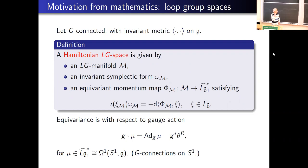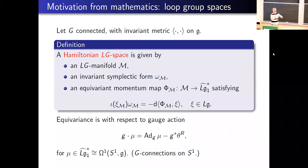The setting is that you have a connected Lie group with an invariant metric on its Lie algebra, and we look at Hamiltonian loop group spaces — infinite-dimensional manifolds with a symplectic form and an equivariant moment map taking values in the dual of the Lie algebra of the loop group. More precisely, you look at the central extension of the loop group and the moment map takes values in the affine hyperplane at level one — it's only affine equivariant if you don't centrally extend. Otherwise it satisfies the usual moment map condition, and equivariance here is relative to the gauge action, where you think of the dual of the Lie algebra of the loop group as connections on a circle.